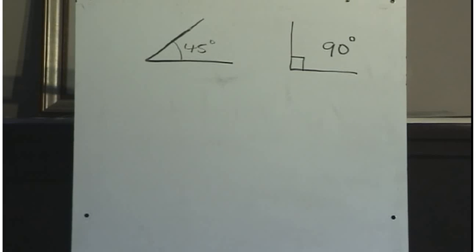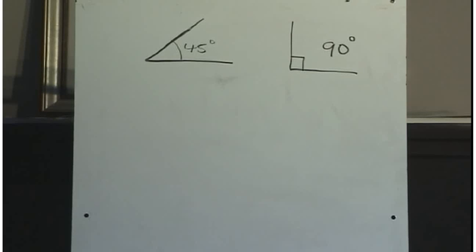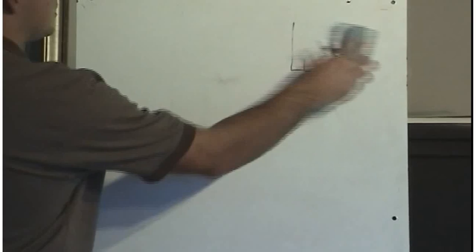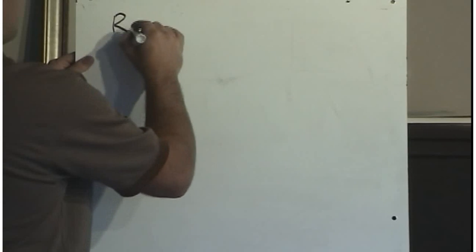Up until now, you have measured angles in degrees. Here's an angle of about 45 degrees and here's an angle of about 90 degrees. If we were asked to define what one degree would be, we would say it's 1/360th of a circle because one circle has 360 degrees in it. But we're going to learn now another unit that we can measure angles with, and that unit is radians.